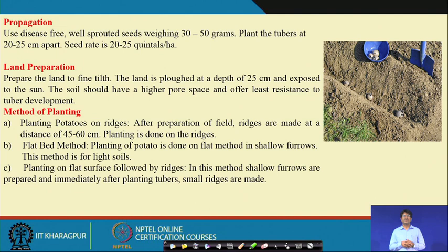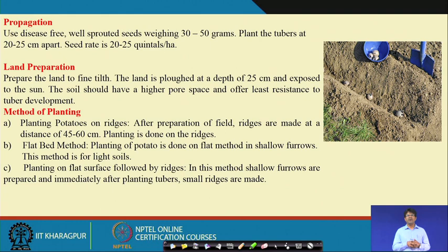Land should be well aerated with loose, friable soil. Go for primary and secondary tillage operations to achieve loose soil for planting potato tubers. Plowing depth is around 25 cm; the soil should have higher pore space and offer least resistance to tuber development — mainly loamy soils are suitable for better growth and tuber development.